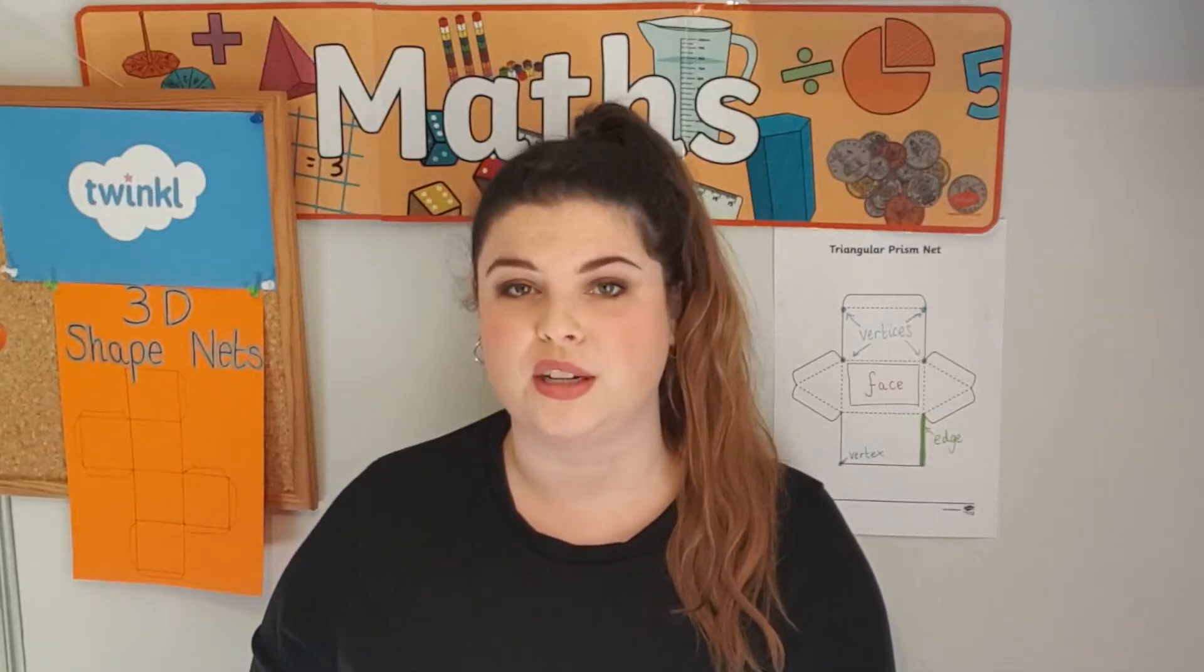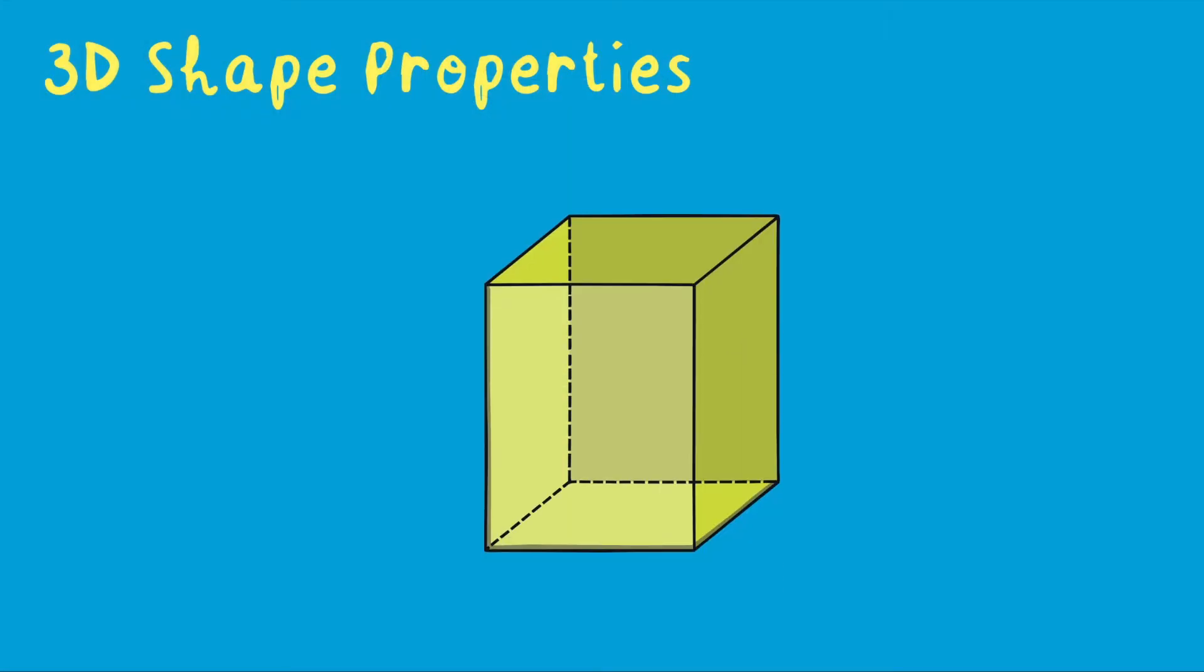All 3D shapes are different, but they have three primary properties in common. These include faces. A face is a flat or curved surface on a 3D shape. For example, a cube has six faces.